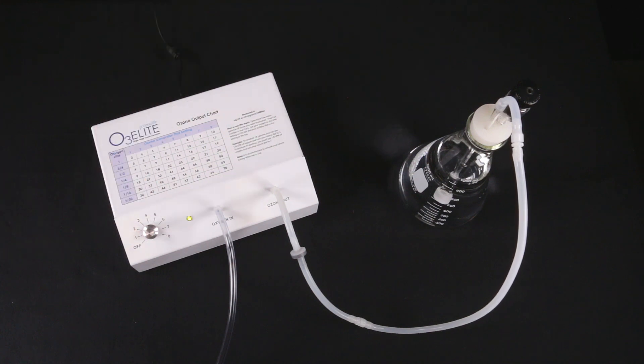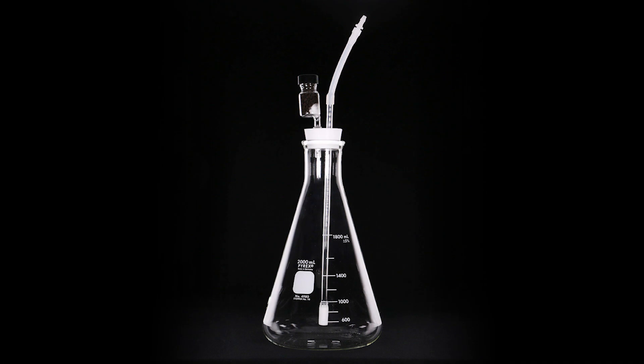That completes the setup for the 1,000 mil water bubbler. Again, to set up the 2,000 mil water bubbler, follow these same steps.